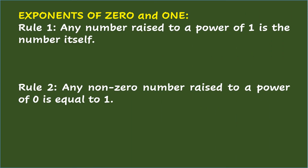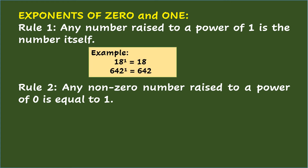There are rules to consider for exponential notation with exponents of 0 and 1. Rule 1: any number raised to a power of 1 is the number itself. For example, 18 raised to the power of 1 equals 18, and 642 raised to the power of 1 equals 642.